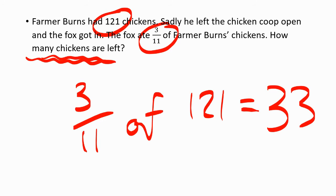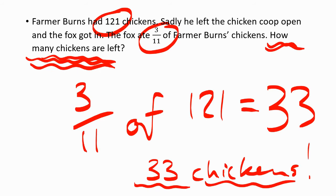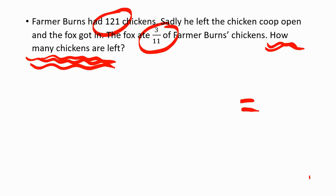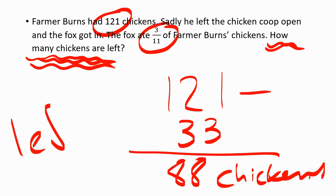But we're not finished — we've only found out that 33 chickens have been eaten. We haven't answered the question because we've got to find out how many chickens are left. We know 33 have been eaten, so what's the next bit to do? The next bit is 121 — that's the total number of chickens — take away 33, because that's how many were eaten. And the answer is 88. So 88 chickens are left.